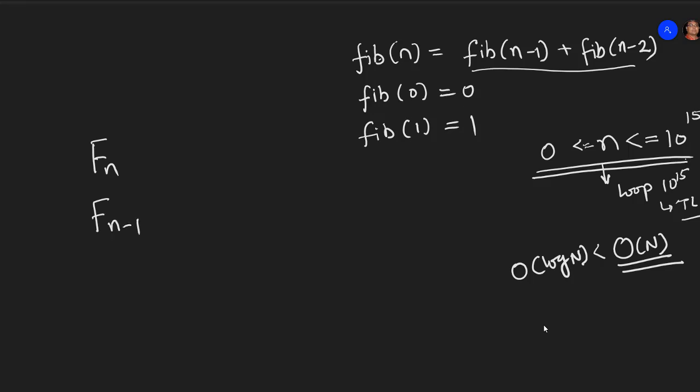And same way I can also write f of n minus 1. And this will be as it is. Now if I try to rewrite it, I can also rewrite it as this is f of n minus 1 plus 0 into f of n minus 2. So there are coefficients here. Now what I will do is, I will just expand it to be, this is 1 and this is also 1.